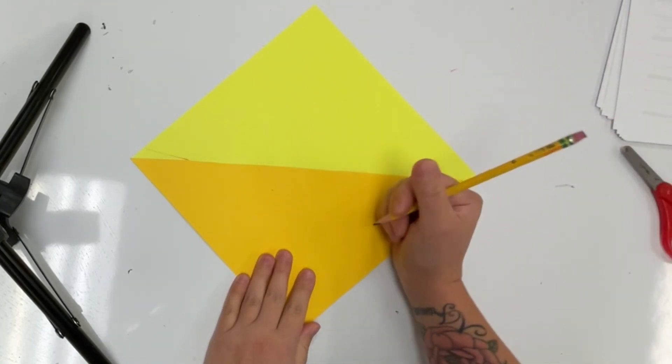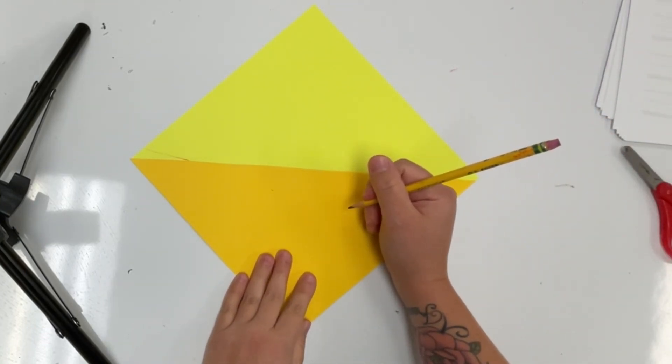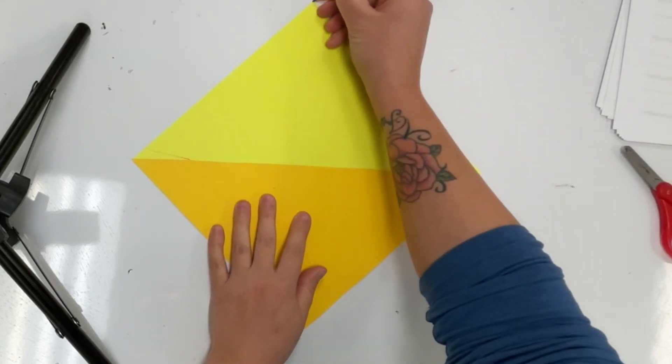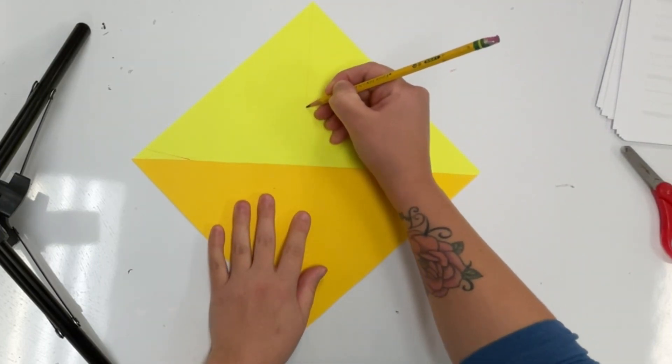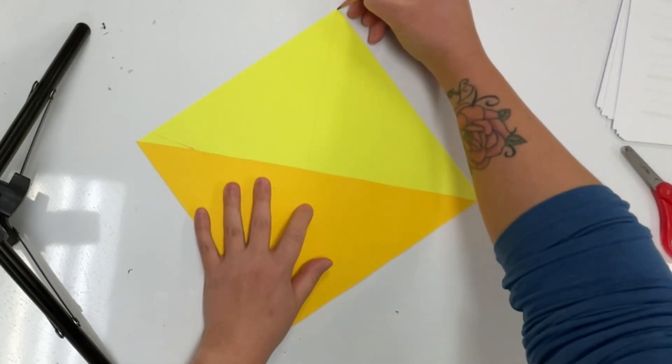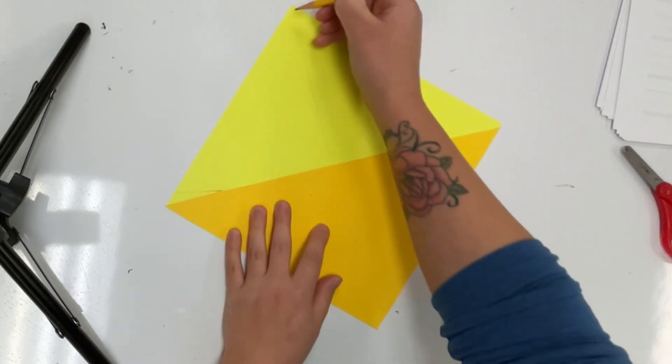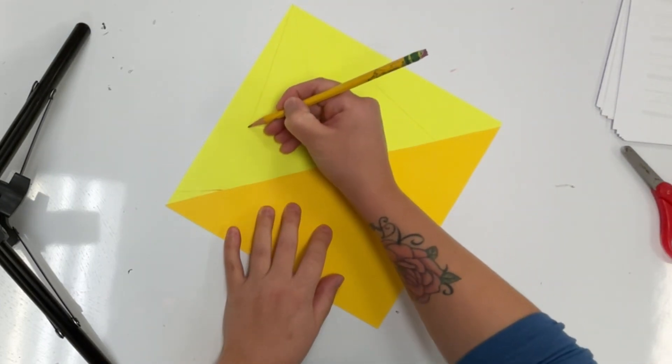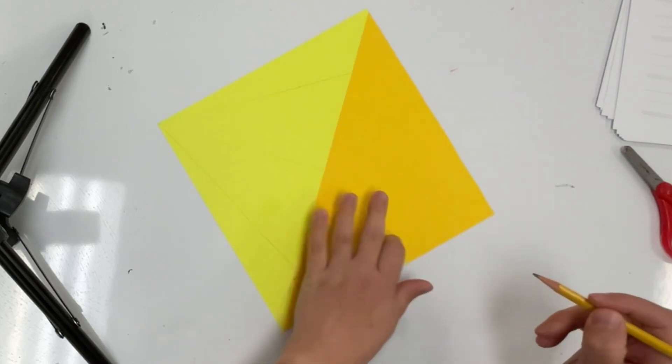I'm going to draw some lines from the top corner to that center line. I'll do one right down the middle from the top corner and then I'll do two on either side of it. You can do more lines if you want to. I'm doing three.